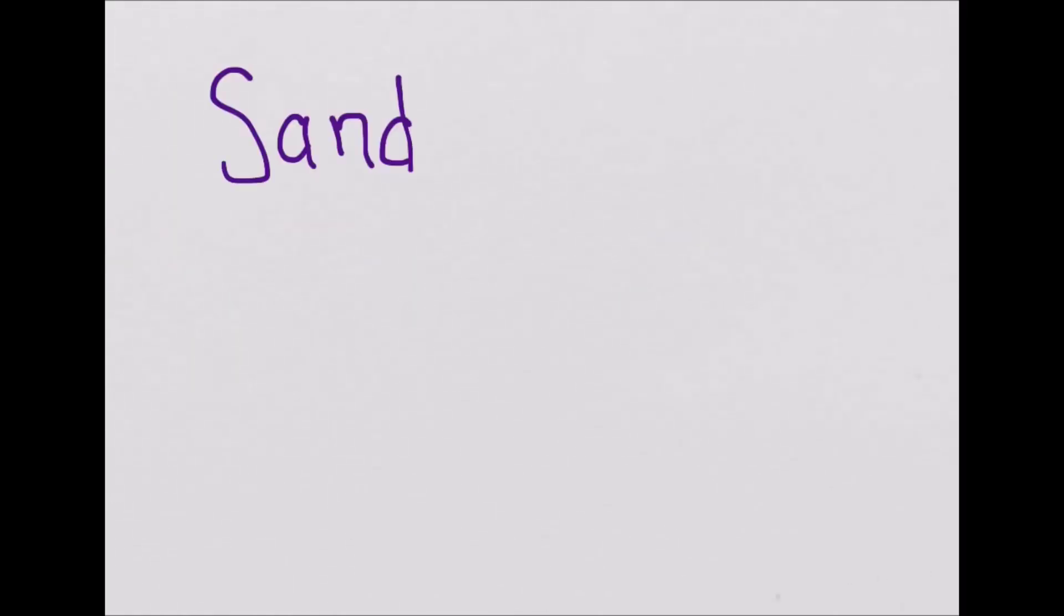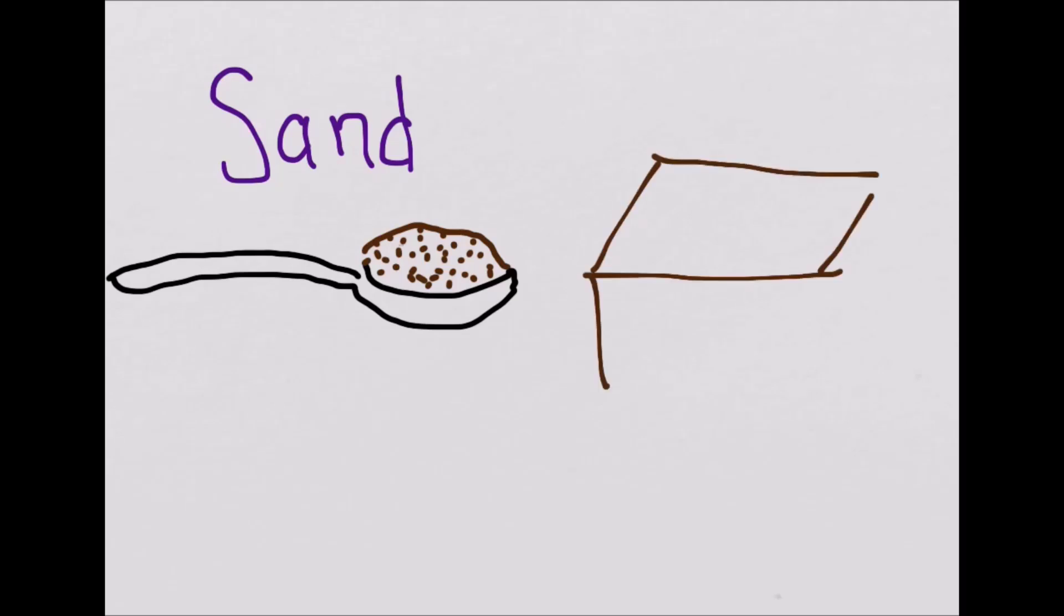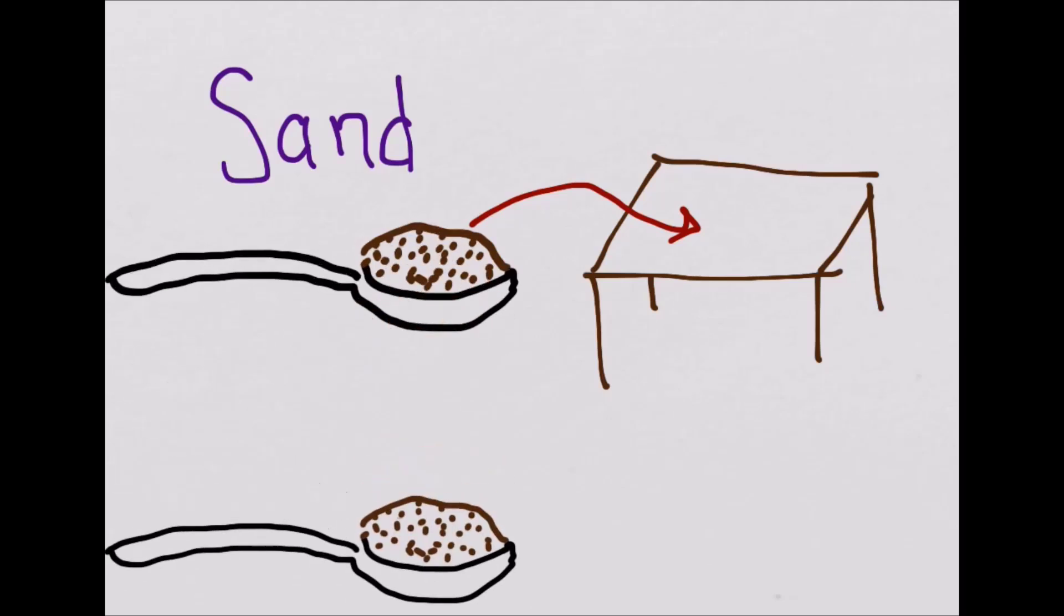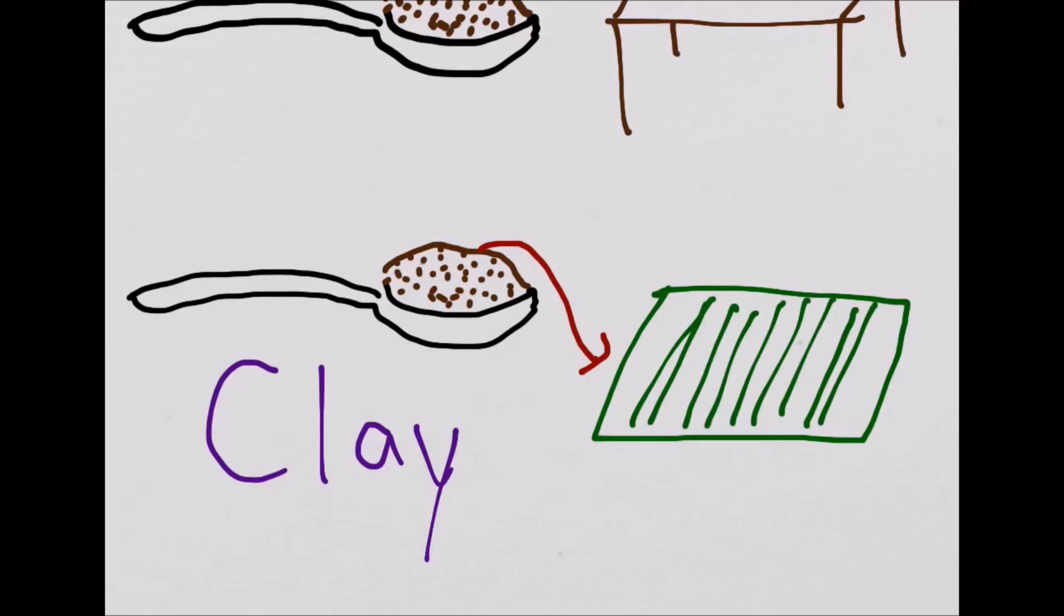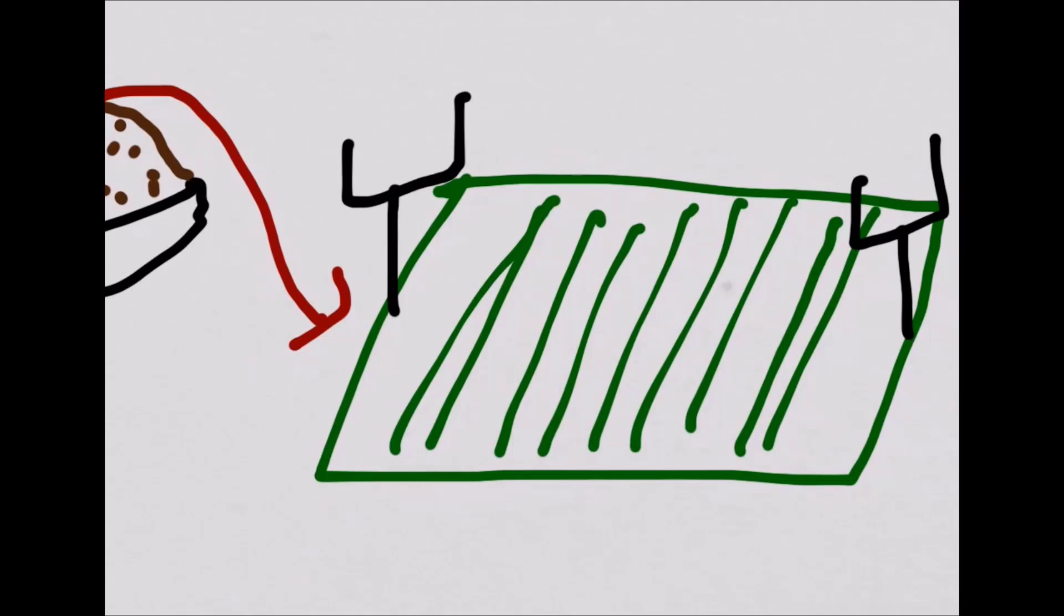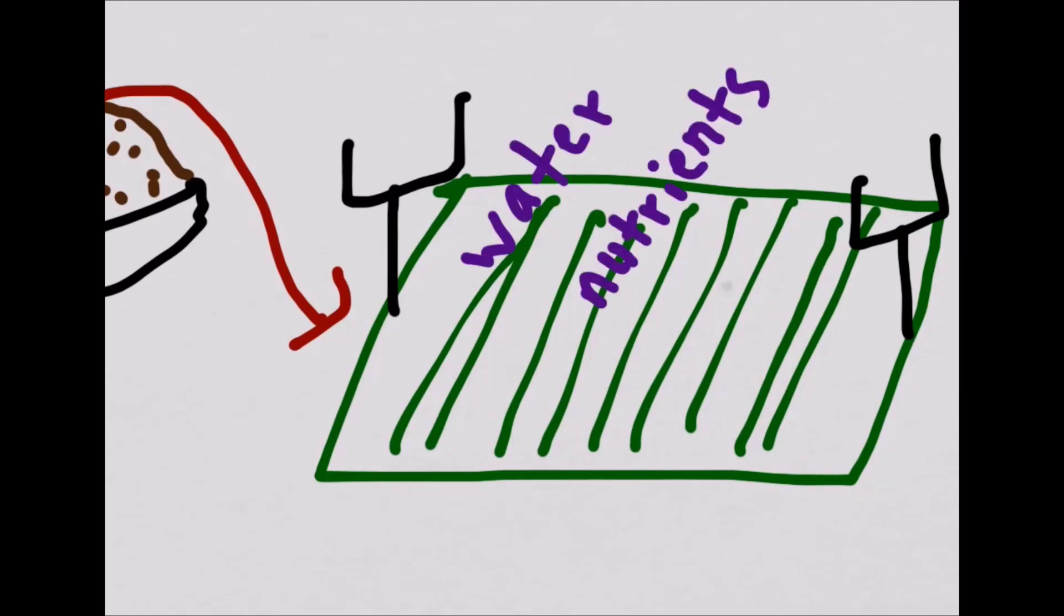If you spread out the surfaces of all the grains of sand in a tablespoon, it would roughly cover your kitchen table. But if you did the same with one tablespoon of clay, it could cover a football field. And all that surface area can hold on to water and nutrients and pollutants.